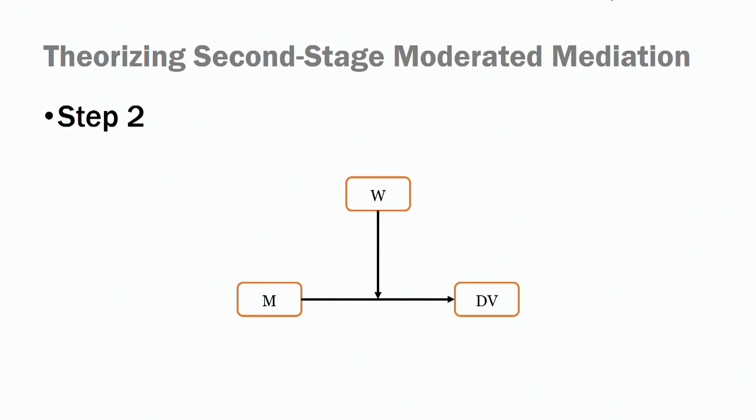The next step is a little bit different. We look at the relationship between our mediator and our dependent variable and how that relationship changes based on the values of the moderator. Remember, this is the second path in our mediation model — the path between the mediator and the dependent variable that changes based on the values of our moderator.